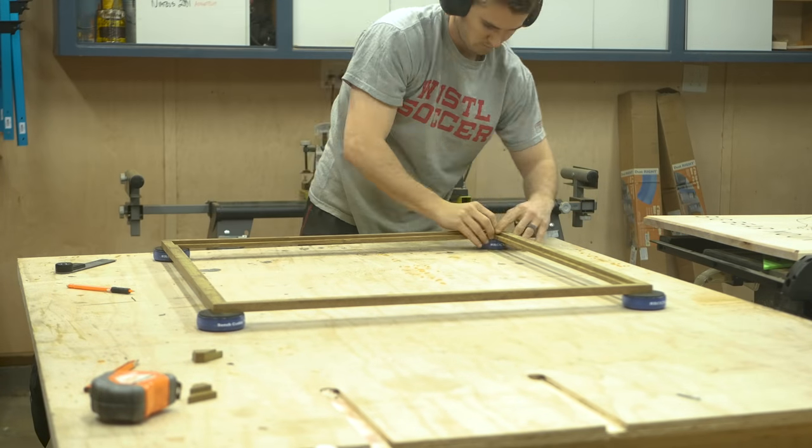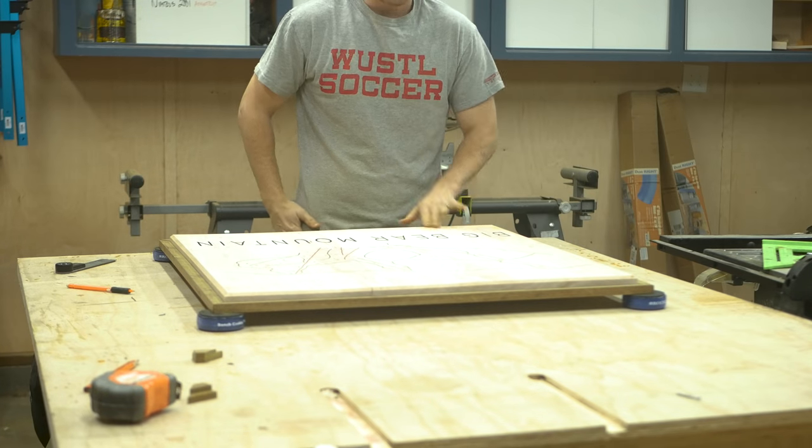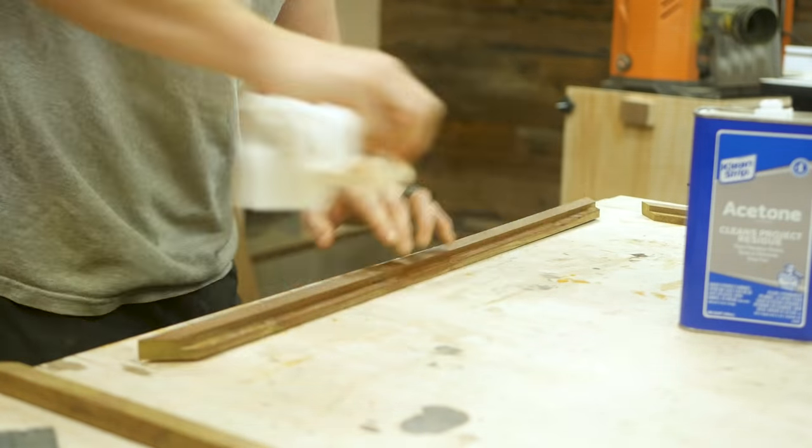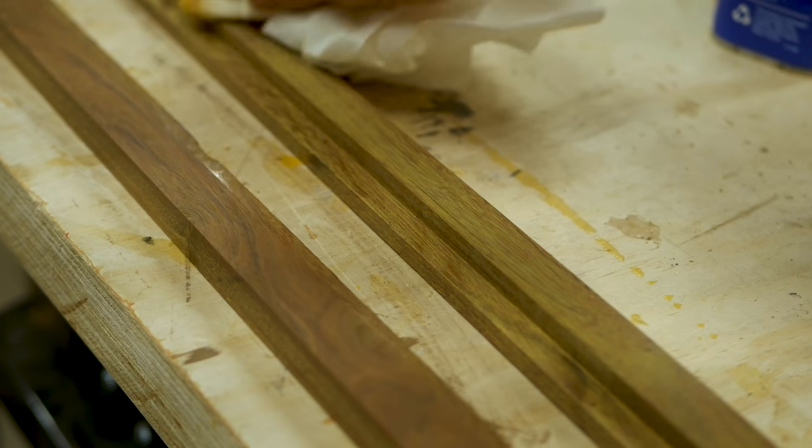Measure three times, cut twice. Before assembly I used some acetone to remove the excess sawdust. You can see here how much of that fine yellow dust was stuck to each of the pieces.